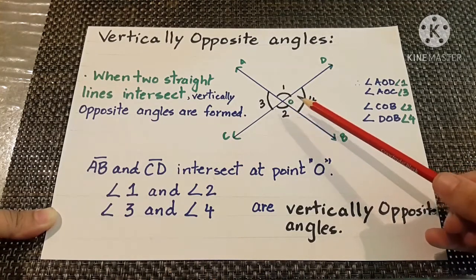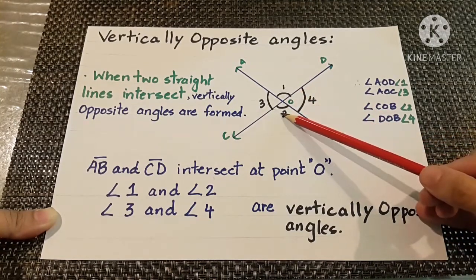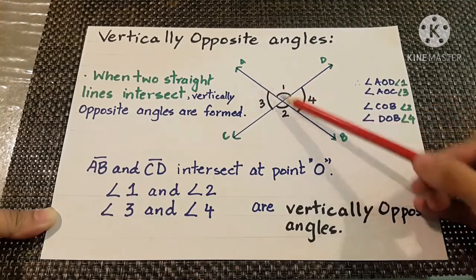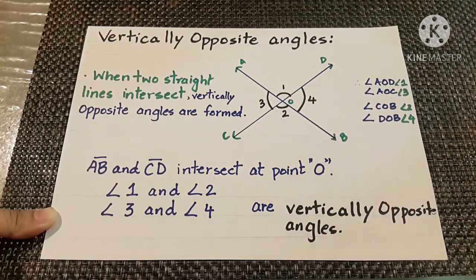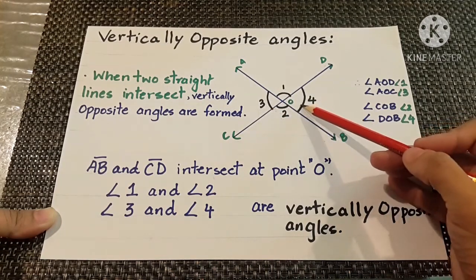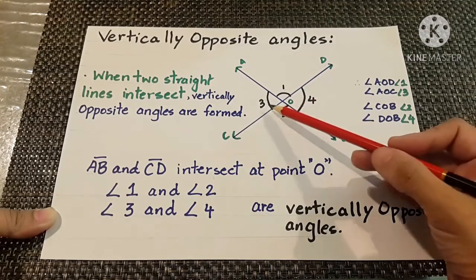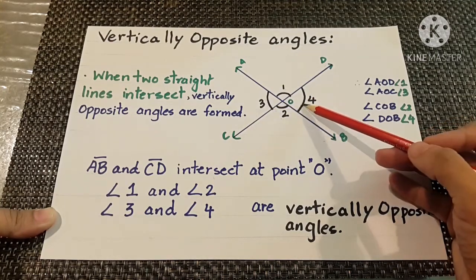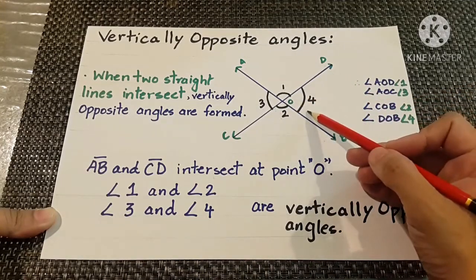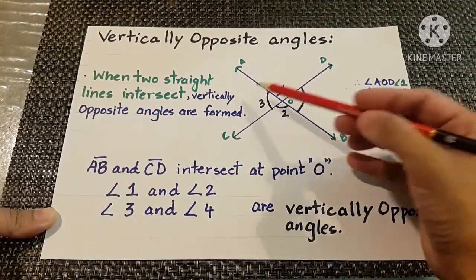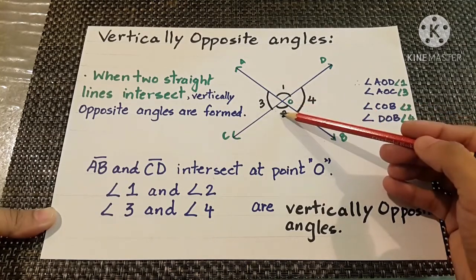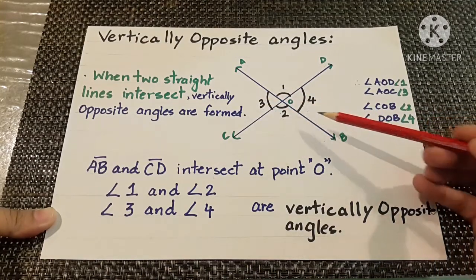Now, what are vertically opposite angles? Angle 1 and angle 2 are opposite, so we can say angle 1 and angle 2, or angle AOD and angle COB, are vertically opposite angles. In the same way, angle 3 and angle 4 are also on opposite sides and are also vertically opposite angles — angle COA is angle 3 and angle BOD is angle 4. So when two lines intersect, the vertically opposite angle pairs are: angle 1 and angle 2, and angle 3 and angle 4.